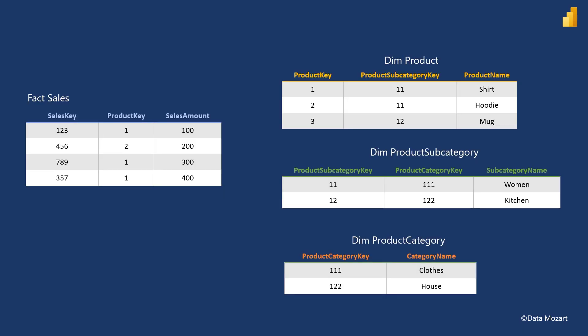Let's examine the following scenario. We have three normalized tables containing different attributes related to products. If we want to analyze sales per product category, in the background three joins will be performed: first between the sales and dim product table, then between dim product and dim product subcategory, and finally between dim product subcategory and dim product category.